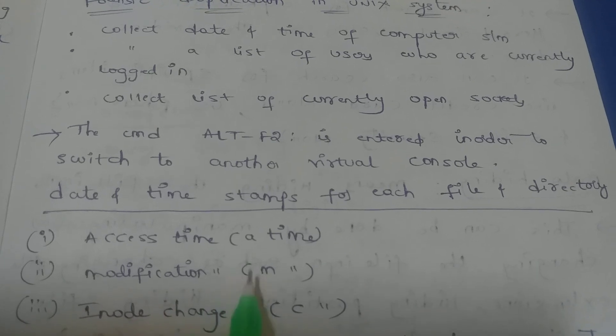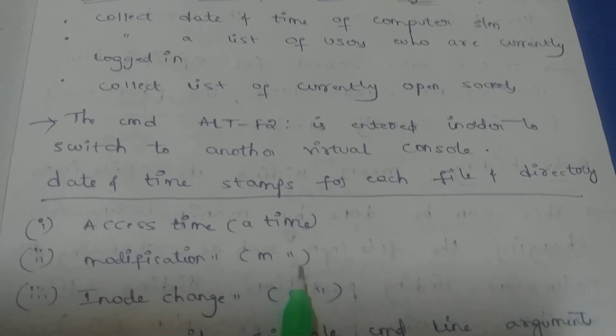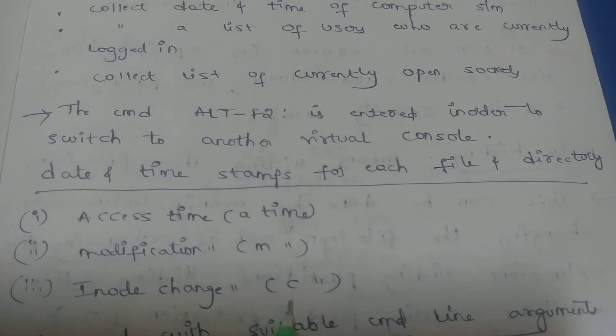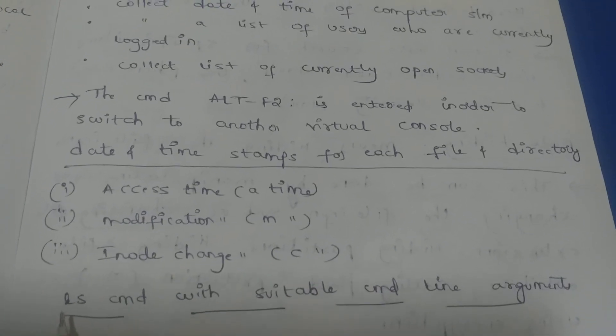Modification time called as M time, inode change time, inode change time C time. These are used for directory date and time stamp for each file and directory.